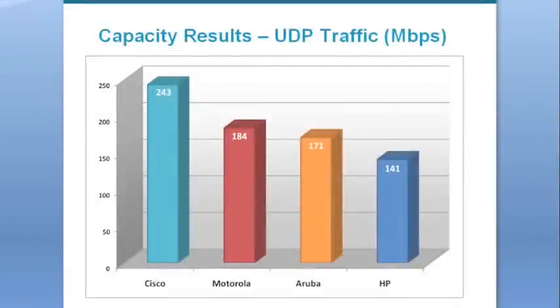In the case of UDP traffic, Cisco delivered 243 Mbps of downstream throughput in this 20 client high density situation. Other vendors were at least 50 Mbps slower than Cisco, with HP being more than 100 Mbps down in comparison.